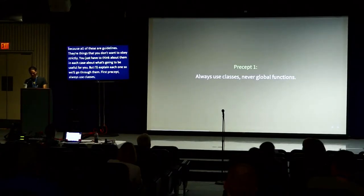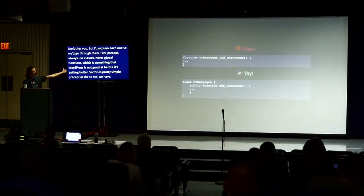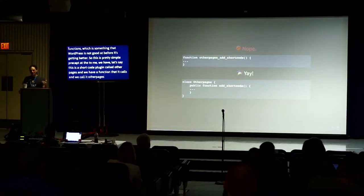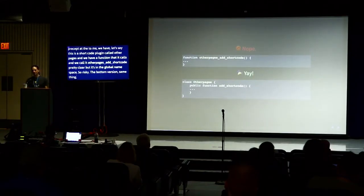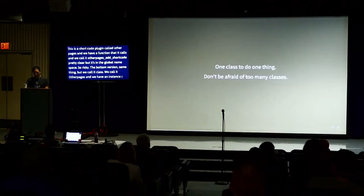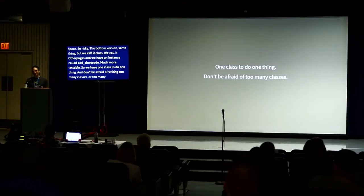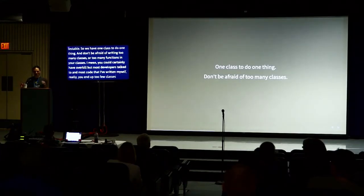At the top we have a function called other_pages_add_shortcode — it's in the global namespace, which is risky. The bottom version creates a class called OtherPages with a public instance function called add_shortcode. Much better and much more testable. You should have one class to do one thing, and don't be afraid of writing too many classes or too many functions in your classes. Most developers end up writing too few classes because they worry about too many files. Don't worry about it — write more classes, it'll make everything easier.